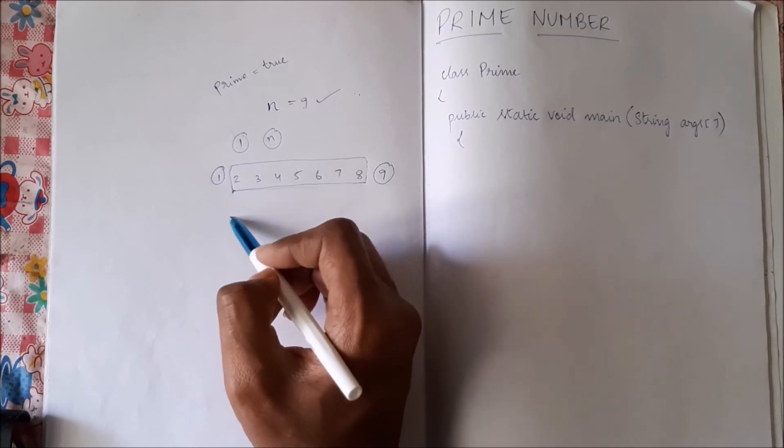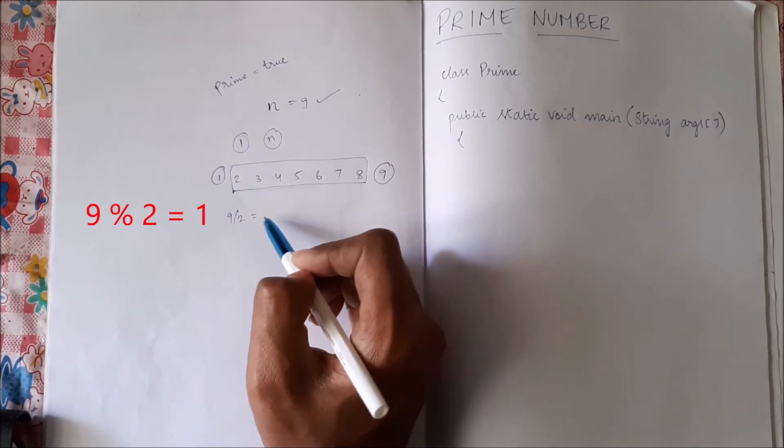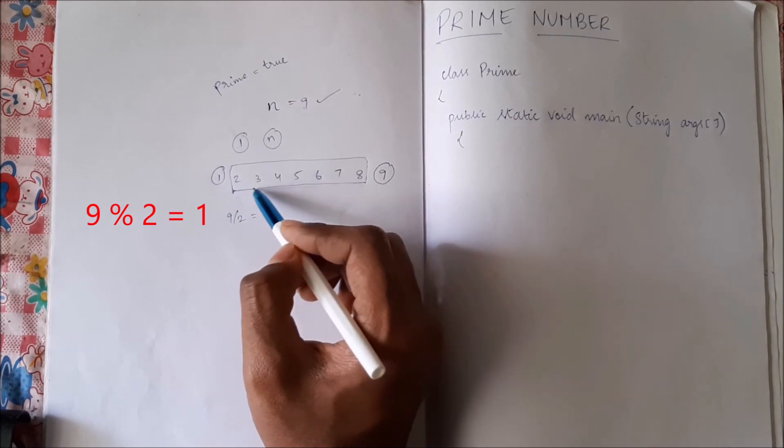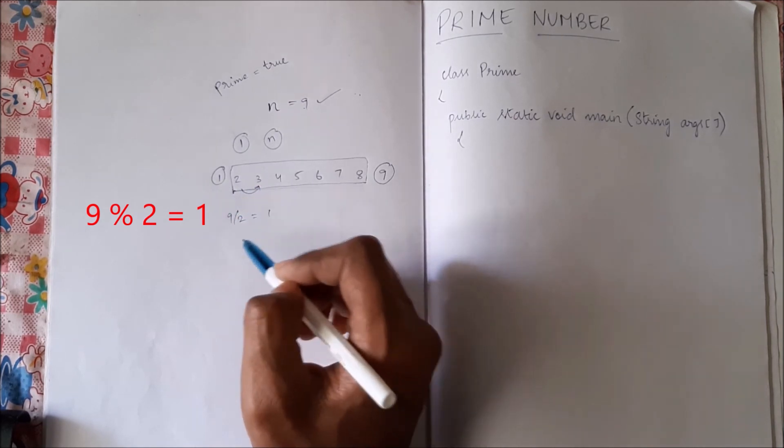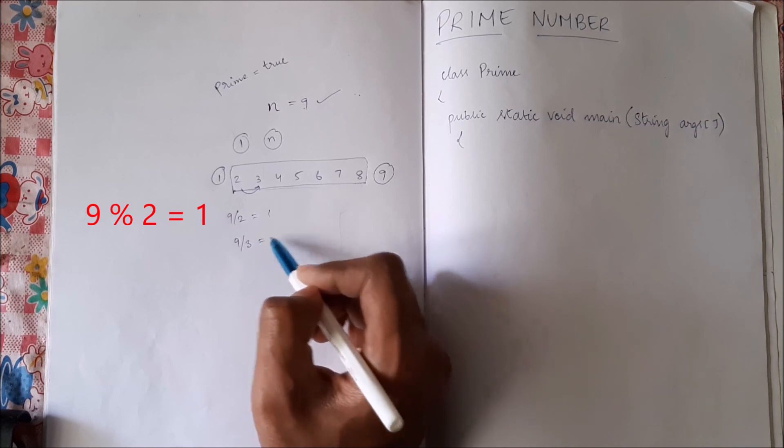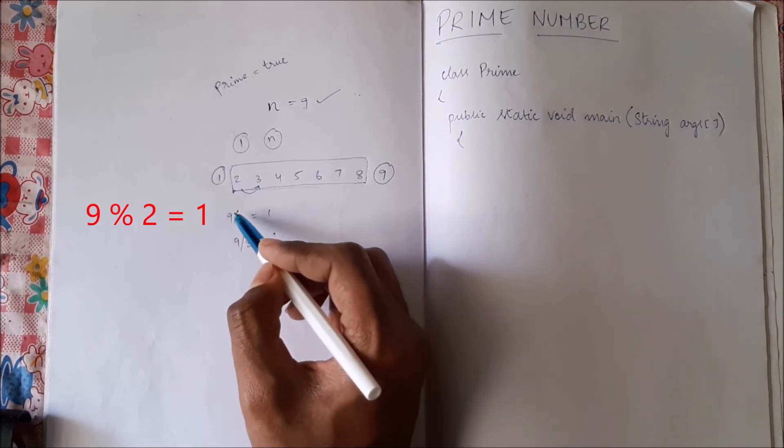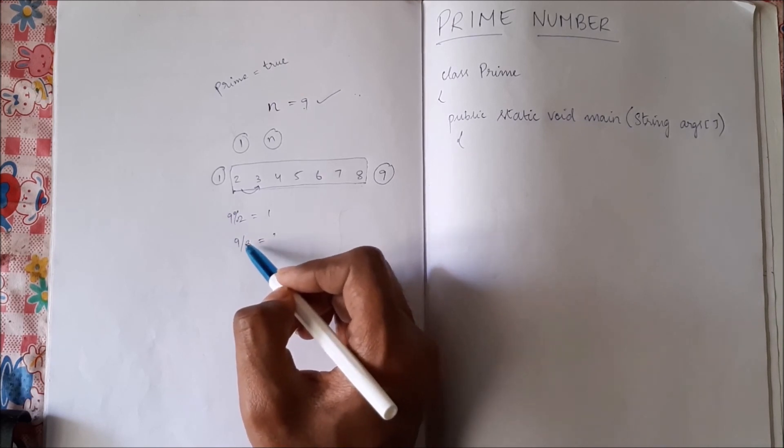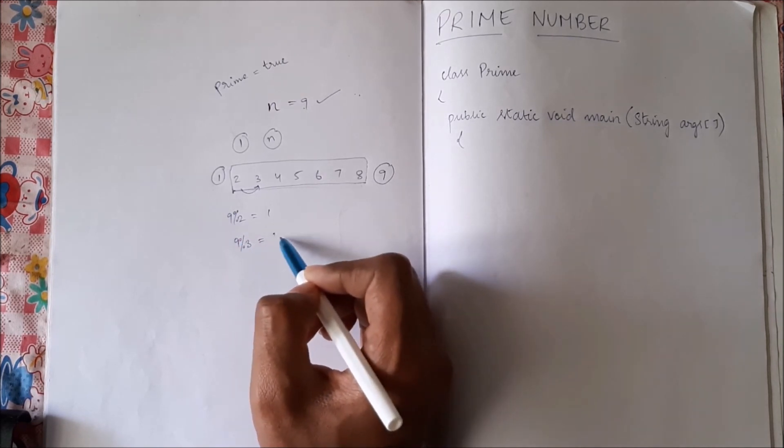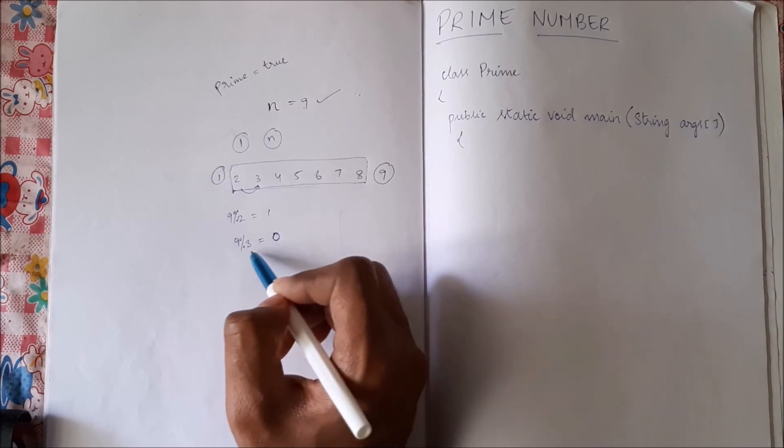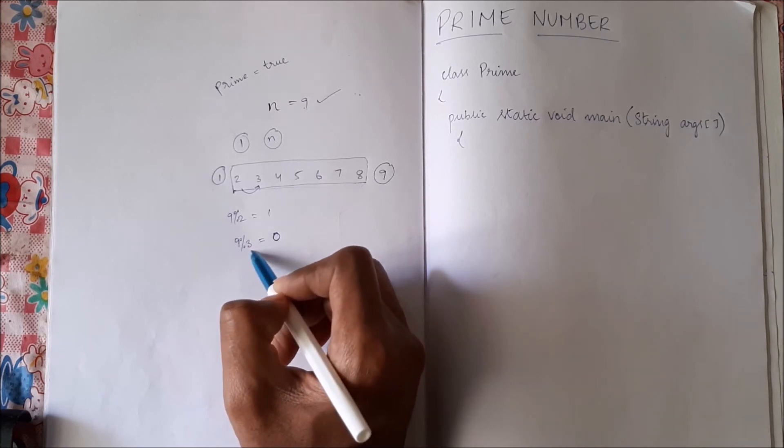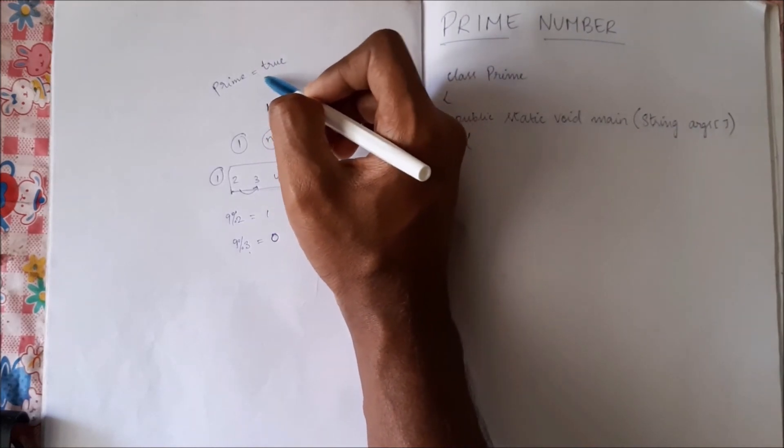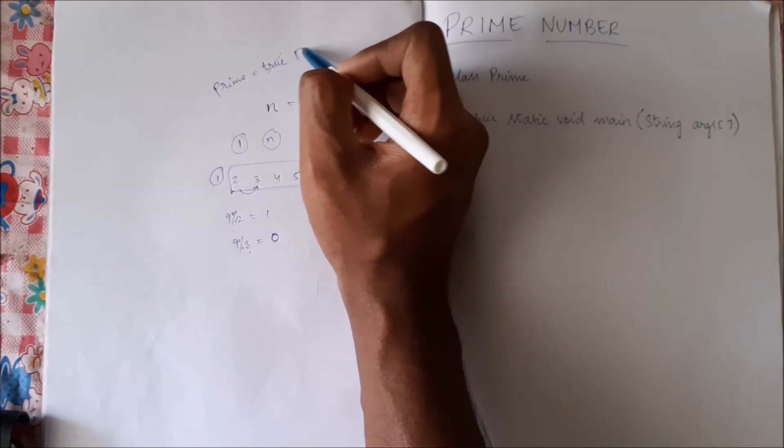So let us see 9 by 2, remainder is 1, so it is not completely divisible. So we go to 3, now we see 9 by 3, yes it is divisible. Sorry this is mod. 9 mod 3 will give remainder as 0, that is 9 is divisible by 3, hence we will say that it is not prime. We will change it to false.